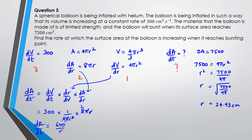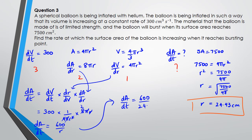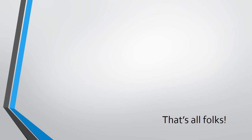Using r equals 24.43, dA/dt equals 600 divided by 24.43, which equals approximately 24.56 centimetres squared per second. That's the rate at which the surface area is increasing when it reaches bursting point. Be aware of these triple threat rate of change questions — they come up in exams as excellence questions, but they're not too bad once you've practised. If you have any questions, pop them in the comments. Thanks for watching.